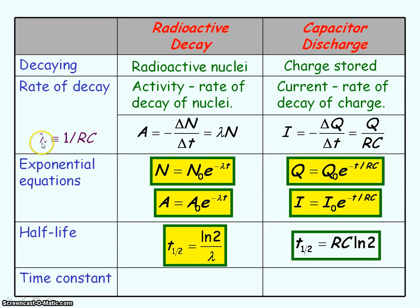Remember the decay constant is equivalent to 1 divided by RC, so if we substitute 1 divided by RC into this equation, we get the equation for half-life for a capacitor discharge.